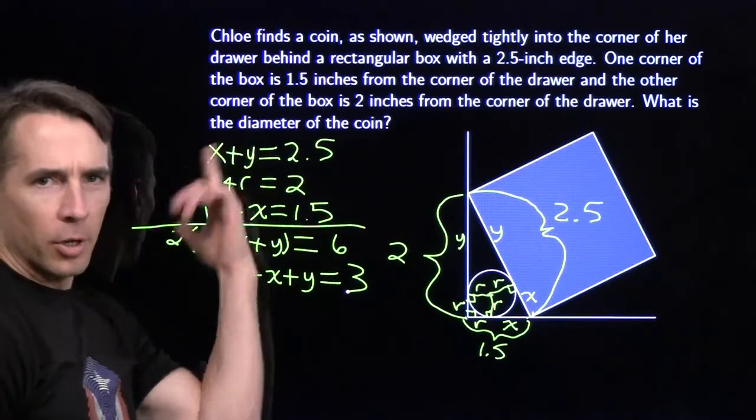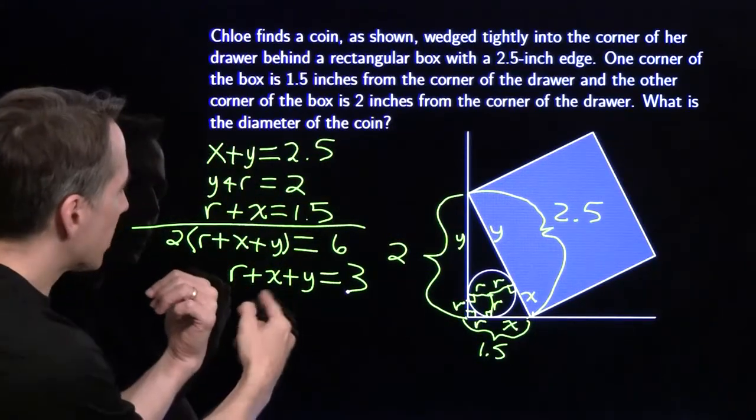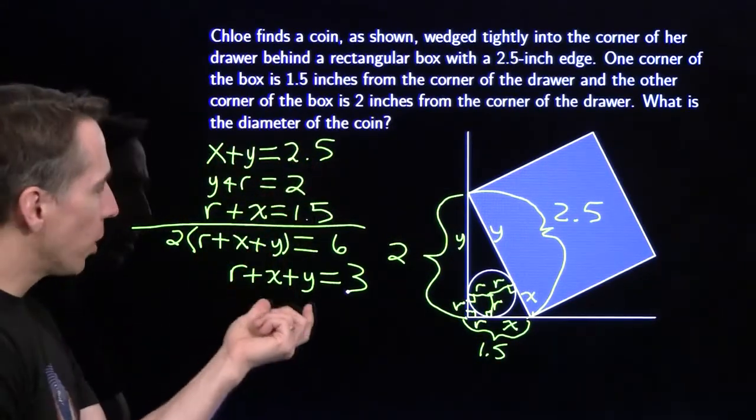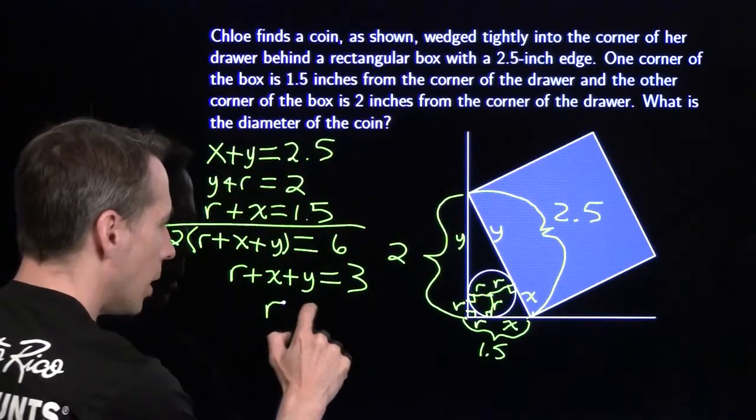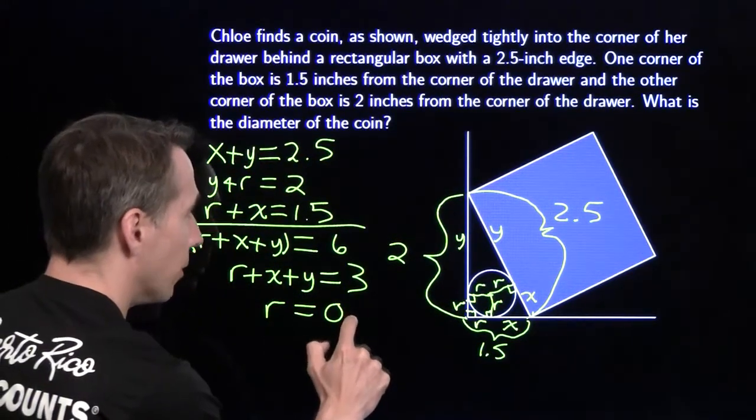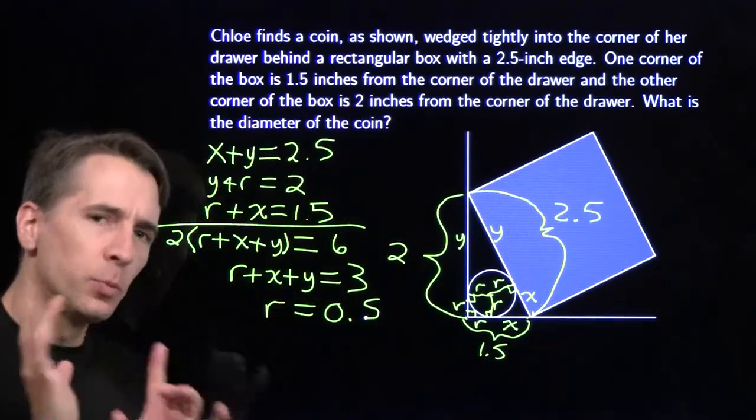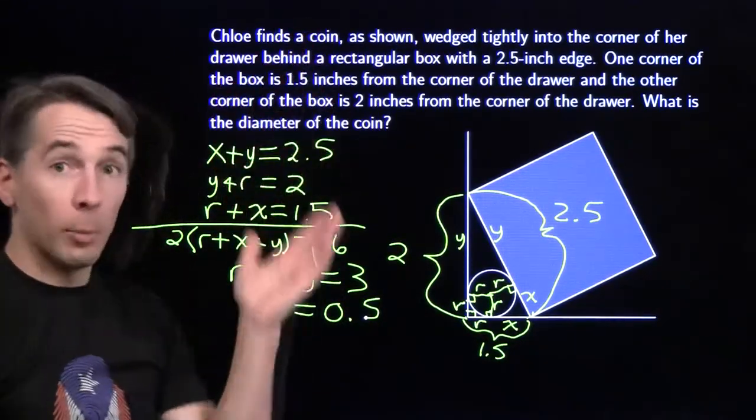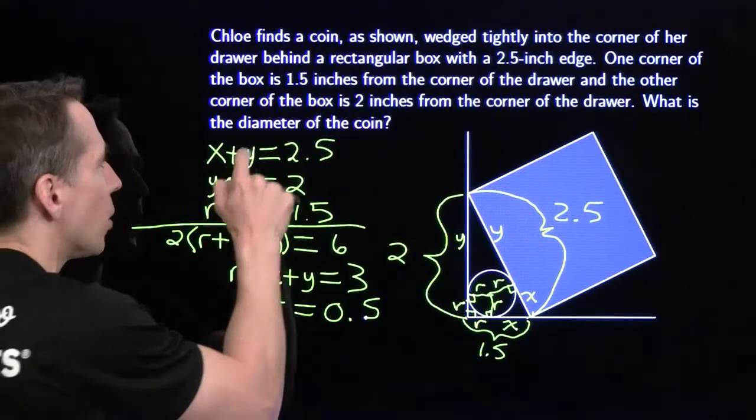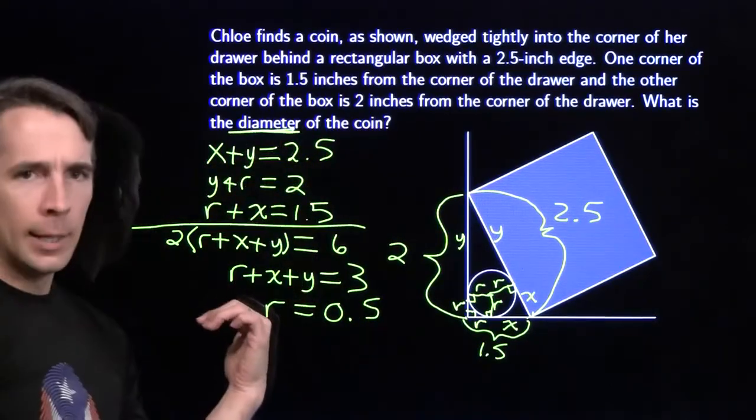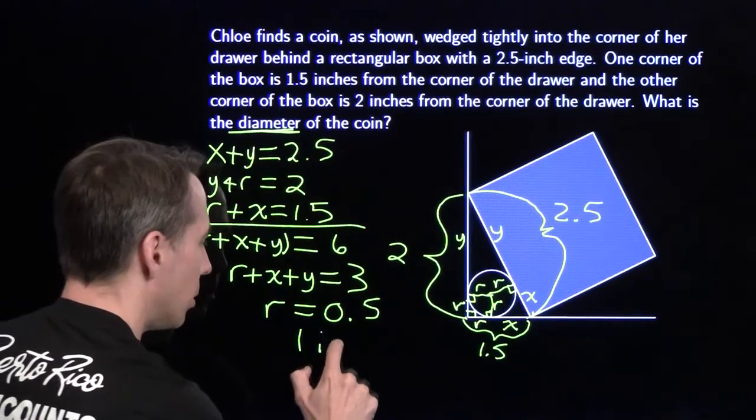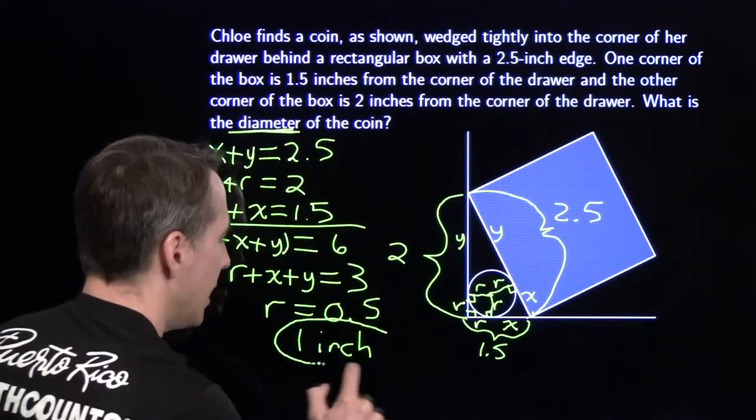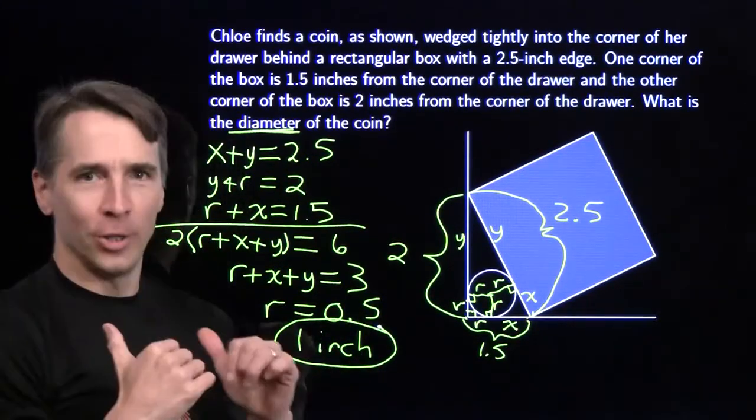Now I want the diameter of the coin, so I'm gonna target r. x plus y sitting right up here is 2.5, so the x plus y there is 2.5. That means that r has to be 0.5. Now we have to be really careful here. Word problem, long word problem. Last step is read the question. We want the diameter, not the radius. Double the radius, the diameter is 1 inch. Sorry, Harv. On to the next problem.